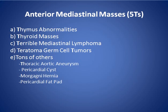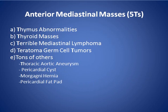The differential diagnosis of anterior mediastinal masses includes thymus, thyroid, lymphoma, and teratoma, along with others such as aneurysm, pericardial cyst, Morgagni hernia, fat, and more.